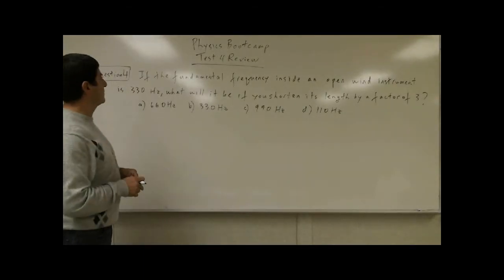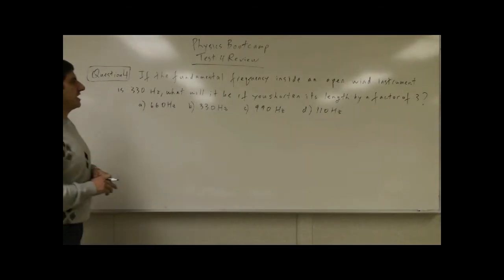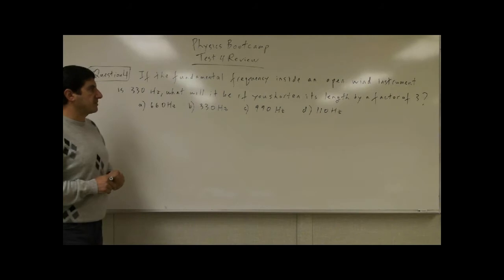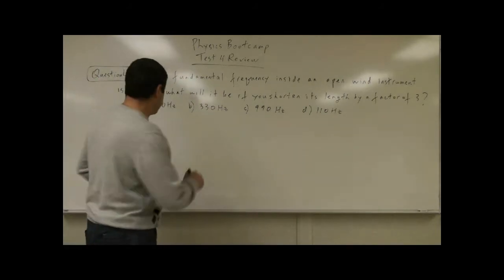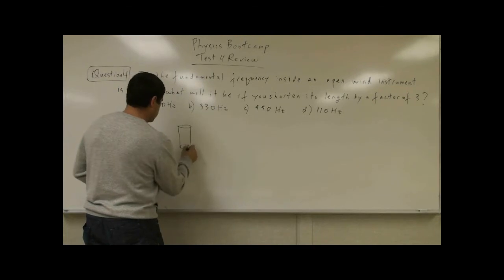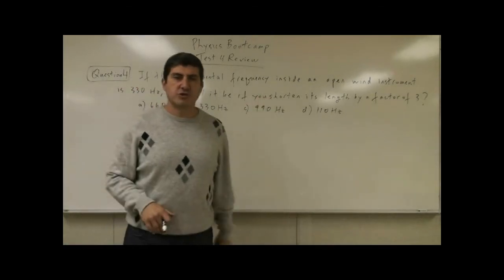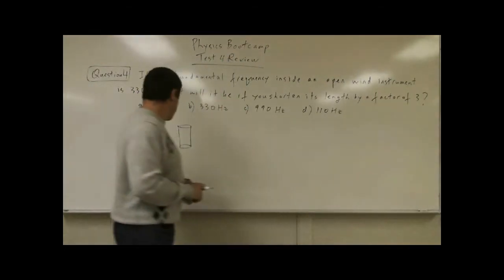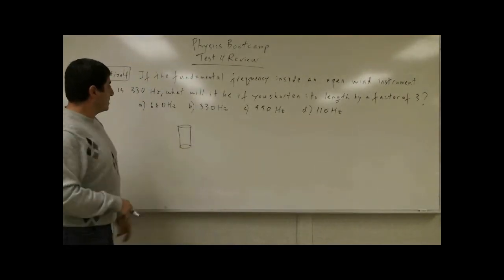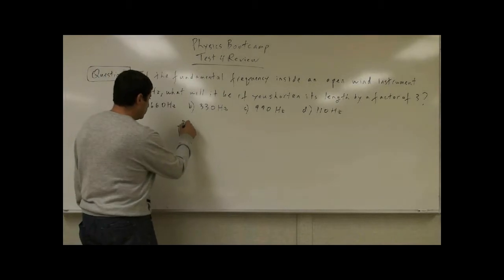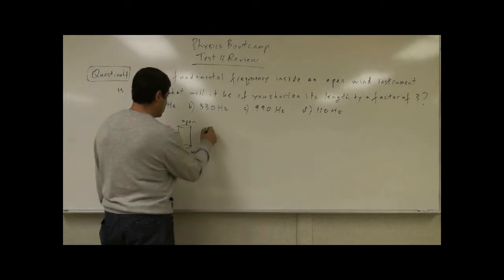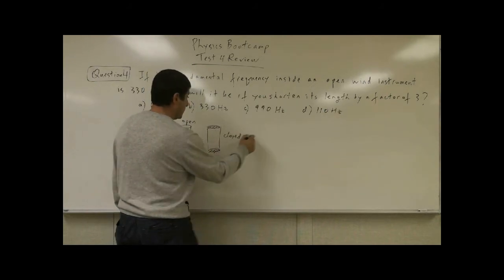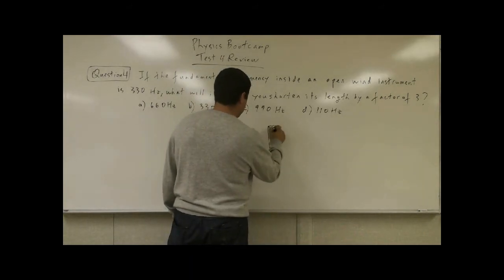Question number four, test for review: if the fundamental frequency inside an open wind instrument is 330 Hz, what will it be if you shorten its length by a factor of three? You have a wind instrument here — it could be a clarinet, organ pipes, flute, trombone, trumpet, or any kind of pipe. It could be open at both ends, closed at both ends, or closed at one end and open at the other.